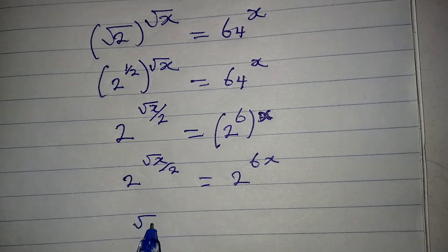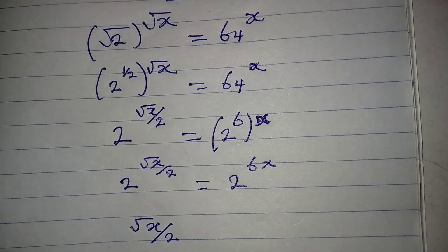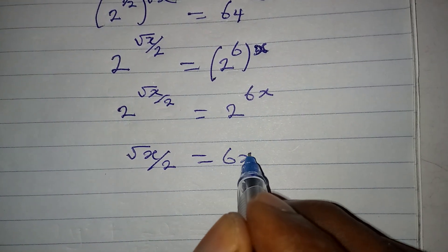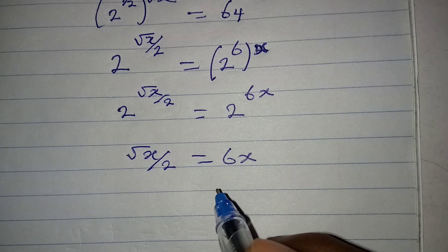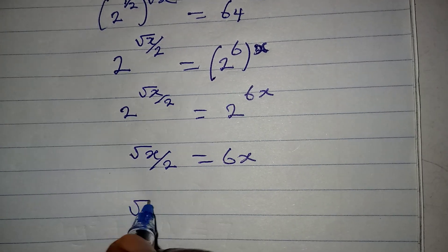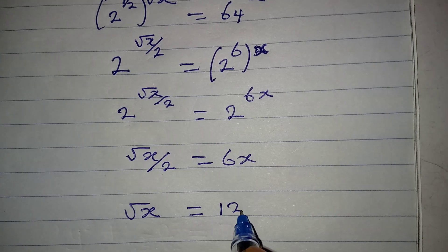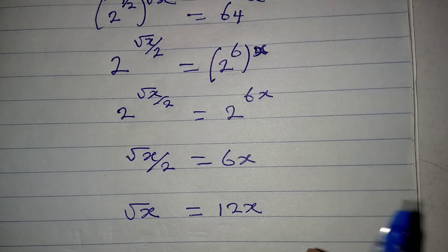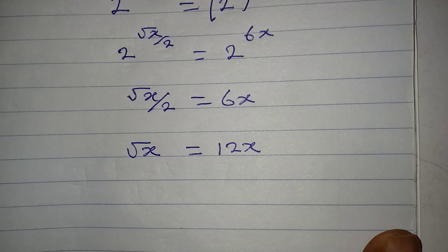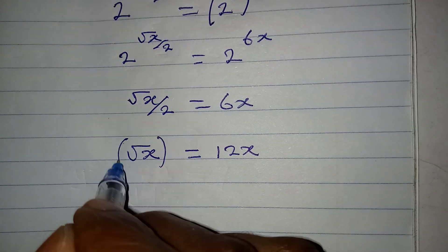Since we have the same base, we equate the powers. So we get square root of x over 2 equal to 6x, which simplifies to square root of x equal to 12x.